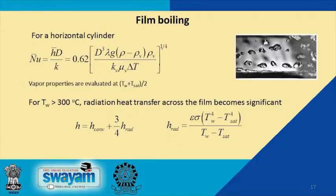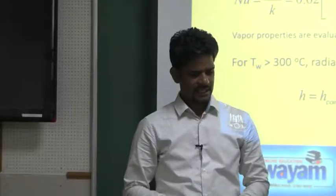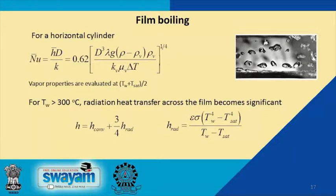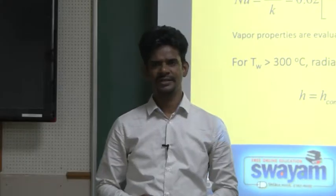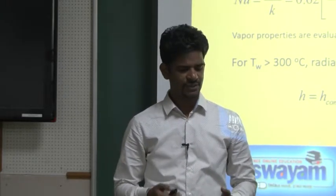The Nusselt number correlations for film boiling are calculated based on the properties of the vapor, since heat transfer is through the vapor. When delta T is very large, radiative heat transfer through the vapor must also be included. The total heat transfer coefficient is the sum of the convective heat transfer coefficient and the radiative heat transfer coefficient. The radiative heat transfer coefficient is calculated based on the temperature of the heated surface, the saturation temperature of the liquid, and the emissivity.